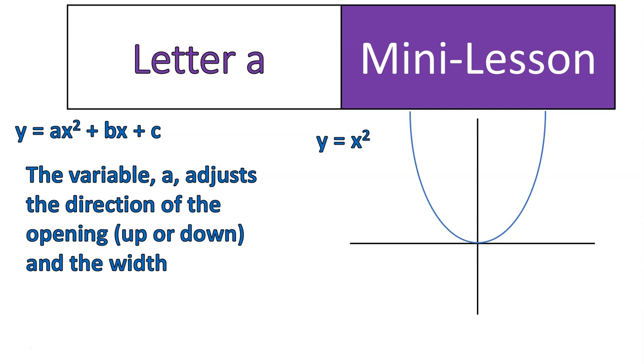So if I change this, notice this subtle change here. Instead of y equals x squared, I have y equals negative x squared. Boom. All of a sudden, it is opening down now.